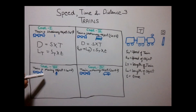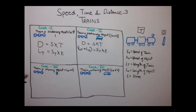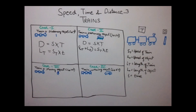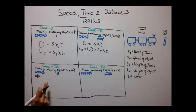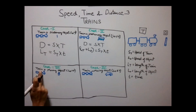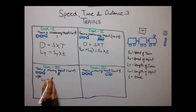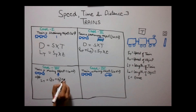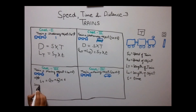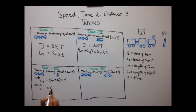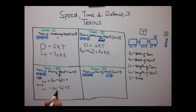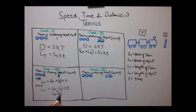The third case is when a train is passing a moving object whose length is zero. Since both objects are moving, there are two sub-cases. When moving in opposite directions, the speeds add up: LT equals (ST plus SO) into T. When moving in the same direction, the speeds subtract: LT equals (ST minus SO) into T, or (SO minus ST) into T.